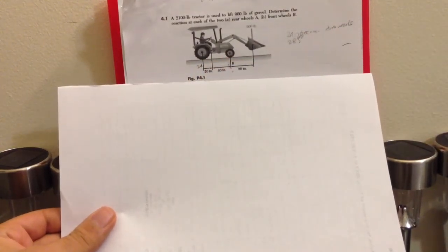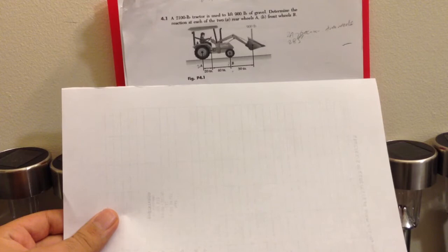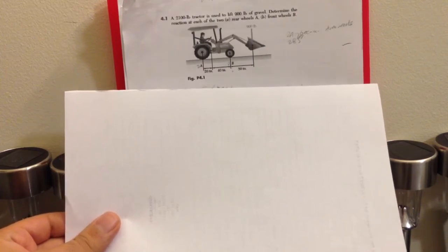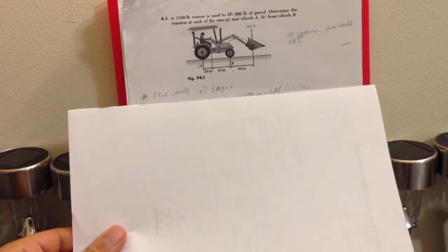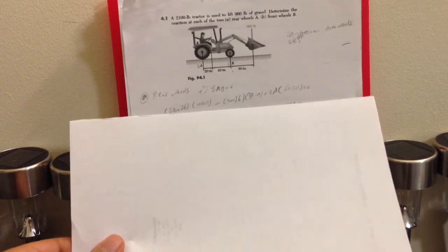So as we get started, first we have to find the rear wheel, of course point A. So first of all, we have to find the moment at B which is equal to zero.